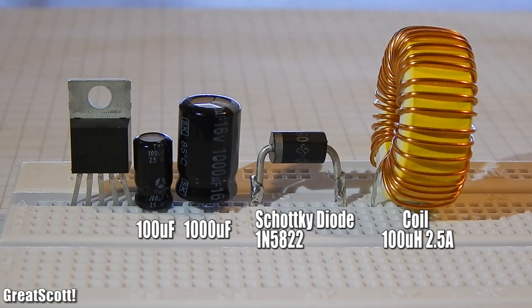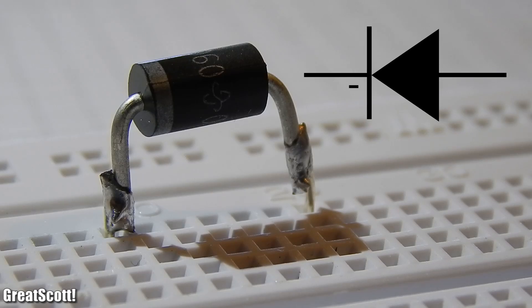It only requires four external parts: one Schottky diode, a coil and two electrolytic capacitors. The diode let current flow in only one way. The other way around the resistance is ideally infinite. So look out during connecting.